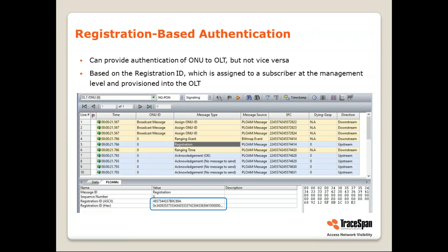The registration-based authentication is a mechanism that can authenticate the ONU to the OLT, but not vice versa. It's based on the registration ID, which is assigned to a subscriber at the management level — it may be hard-coded into an ONU and provisioned into the OLT, or some ONUs allow the user to change it via a local terminal. It is very similar in nature to the password in GPON, which is also optional. The ONU sends its registration ID — you can see an example here in HEX and ASCII — and the OLT checks its database. If the registration ID is defined, the ONU is good to go; if not, the ONU is rejected and does not get serviced.